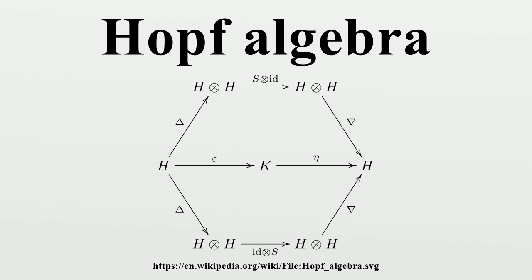Formally, the Hopf algebra is a bi-algebra H over a field K together with a K-linear map S: H → H such that the following diagram commutes. Here delta is the comultiplication of the bi-algebra, its multiplication, eta its unit and epsilon its counit. In the sumless Sweedler notation, this property can also be expressed as S for algebras.